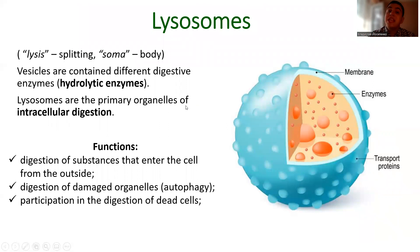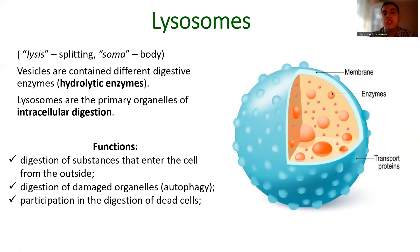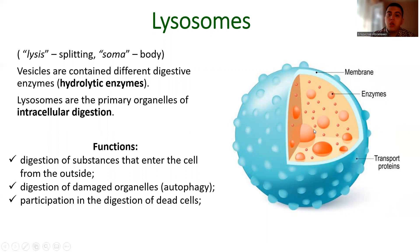I would like to pay attention to the next organelle: lysosomes. From Latin, 'lyso' means splitting and 'soma' means body. Lysosomes are specific vesicles containing different digestive enzymes called hydrolytic enzymes — that is why lysosomes are the primary organelles of intracellular digestion. Their functions include: digestion of substances that enter the cell from outside by phagocytosis; digestion of damaged organelles by a specific process called autophagy; and participation in the digestion of dead cells.